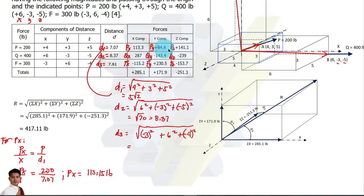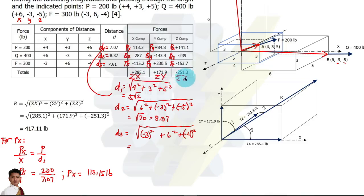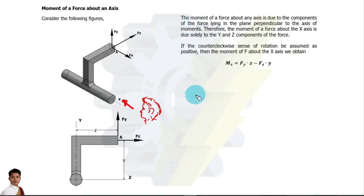After solving all the components, we need to sum them up: solve for the summation of forces along x, summation of forces along y, and summation of forces along z. Once all components are summed, we can use our formula to solve for the resultant.